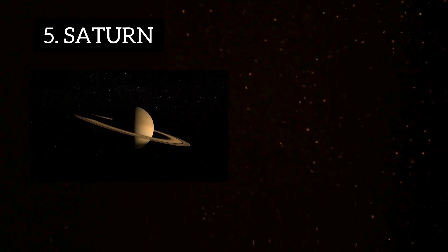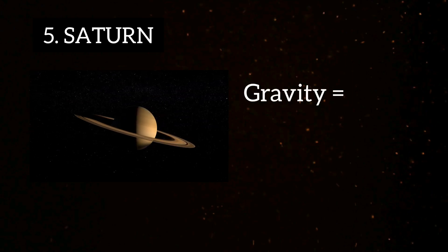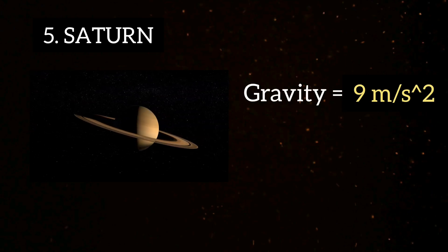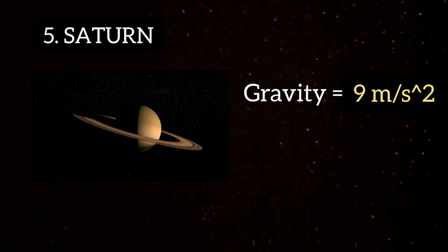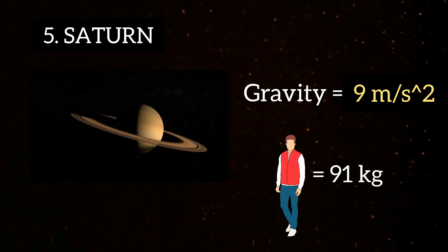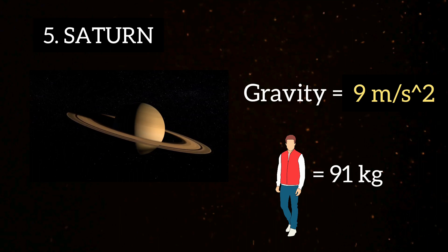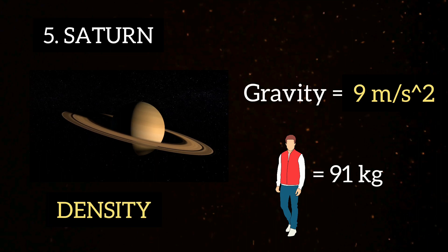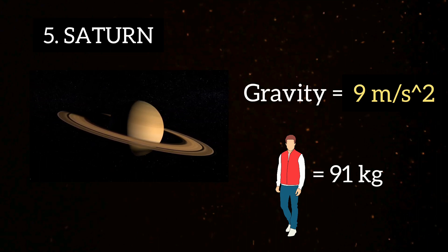Fifth, Saturn, the ringed planet of our solar system, has a gravity of around 9 meters per second square, which is 0.91 times the Earth. So, the person's weight will be around 91 kg on Saturn. You might wonder why the weight is less than Earth given Saturn's large size — the reason is that the density of Saturn is much less than the Earth, so the weight is also less.